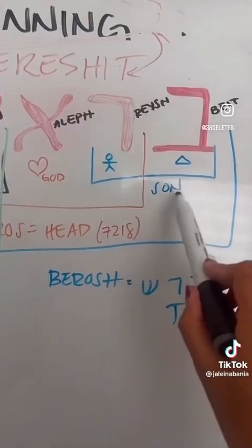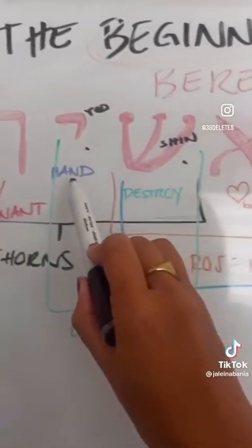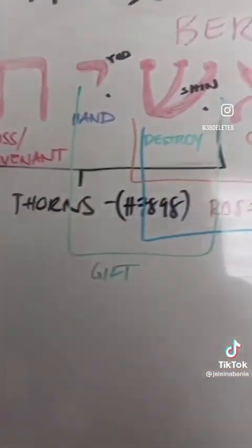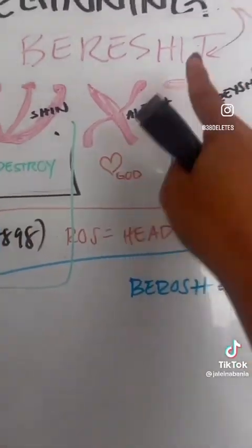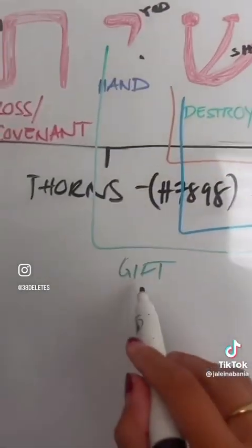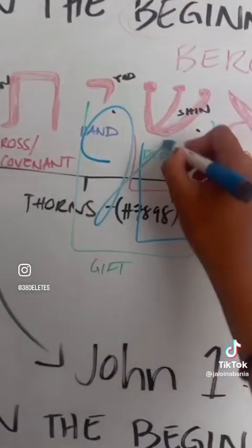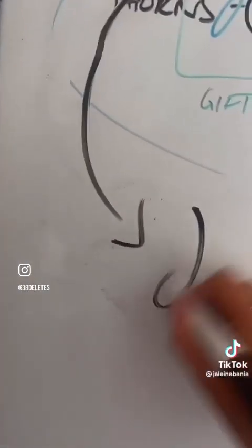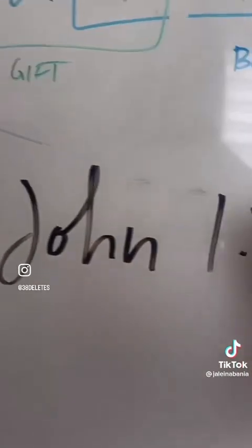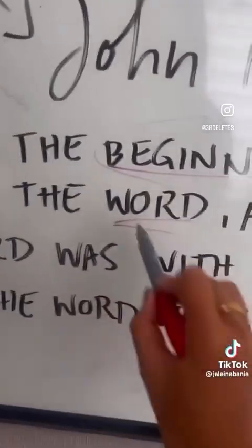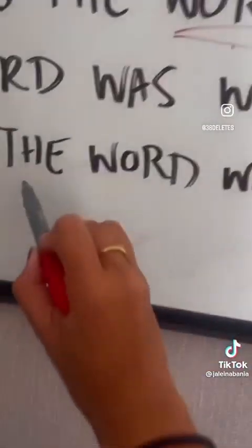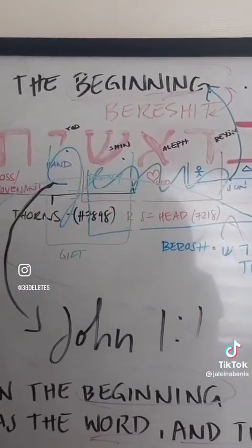Let's try to put this together. The Son of God, destroyed by his own hand on the cross, with thorns on his head, hung up on a tree, as a gift of the covenant. So Jesus was in the beginning? Yes. In John 1:1, what does it say? In the beginning was the Word. And who was the Word? The Word was God, the Word was with God. So since the very beginning, Jesus had always been there.